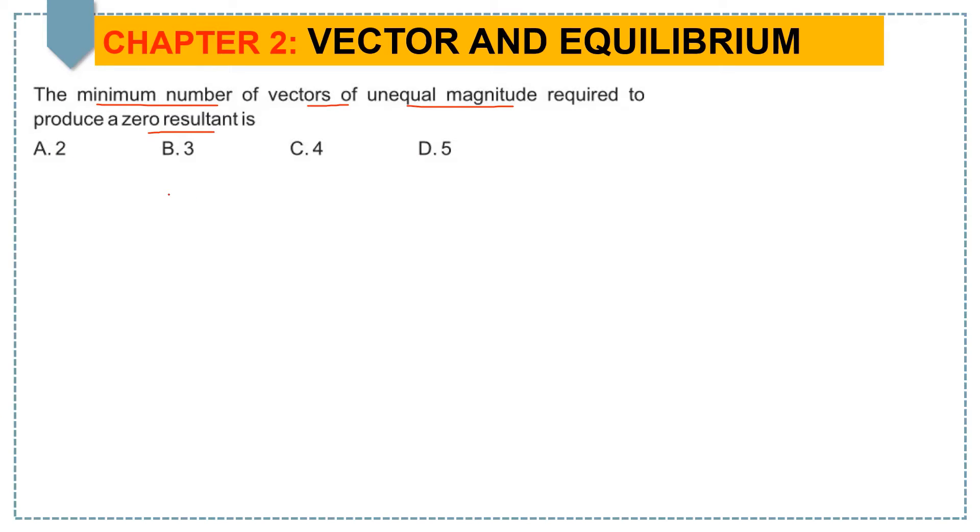To answer this question, first suppose there are two vectors A and B having the same magnitude but anti-parallel to each other. When we add both, we get zero resultant. But the question is about vectors having unequal magnitude, so adding two vectors we can't get zero resultant.